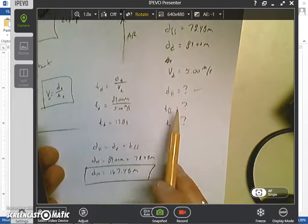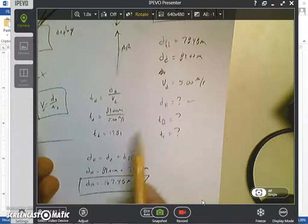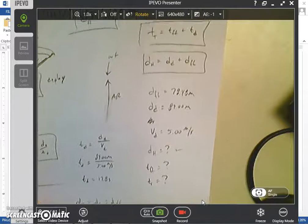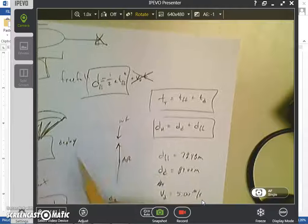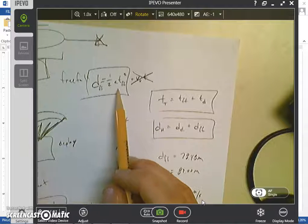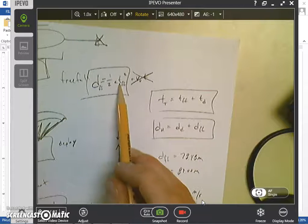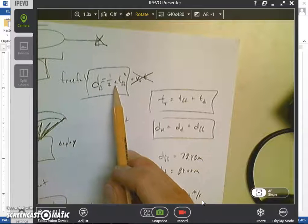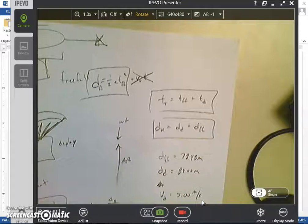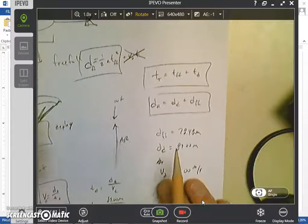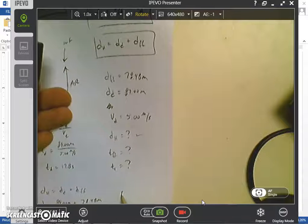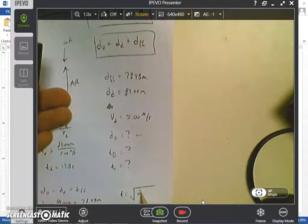Now I need to find the freefall time, and from the freefall time and the deployment time, I can find my total time. So because all objects accelerate at the same rate, they're going to fall at the same rate. So if I know the distance that I fell and what my acceleration is, I can find how long I've been falling.